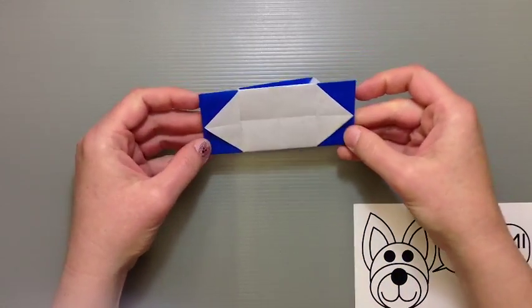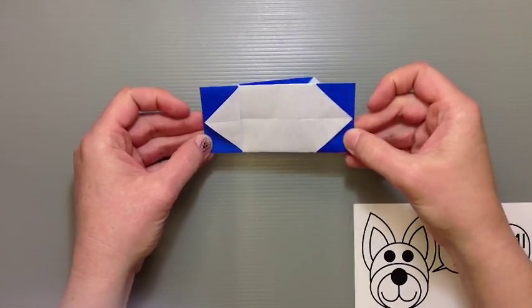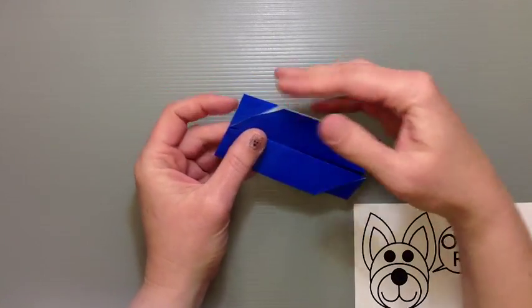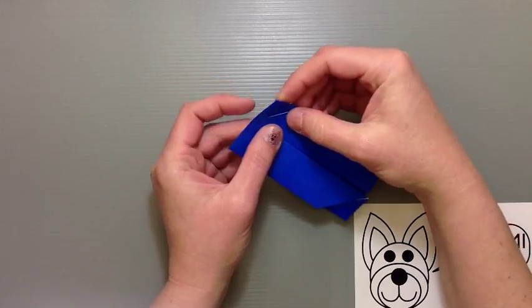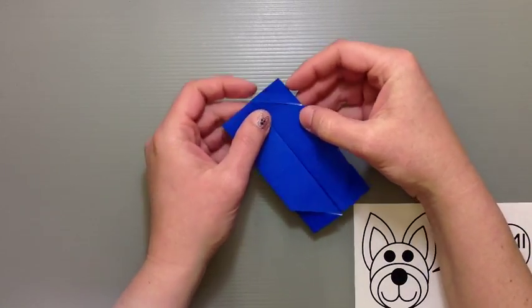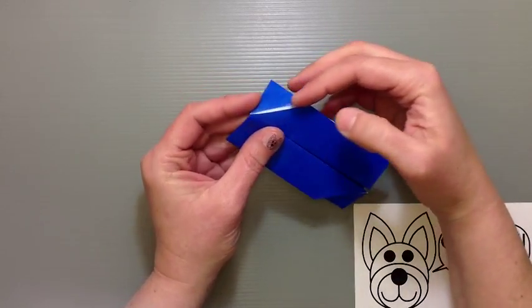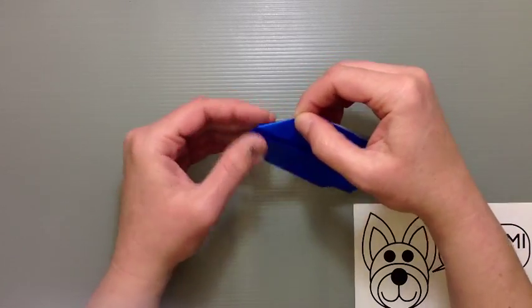Flip it back over again. You should have something that looks like this. Just double check there and turn it back over as we then take each of these corners and fold them into the center, right along where those creased edges are to the paper.